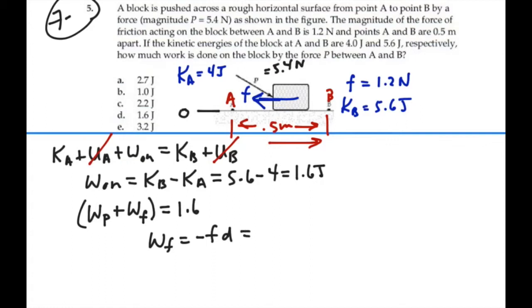So, this is going to be equal to a negative 1.2 newtons times 0.5 meters, or a negative 0.6 joules. So, that is the work done by friction.